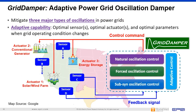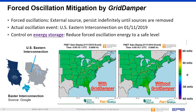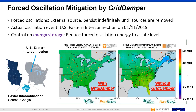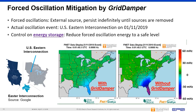Grid Damper also detects and controls forced oscillations. In the U.S. Eastern Interconnection, an oscillation event happened in January 2019 with a driving source in Florida. Based on simulations, Grid Damper was able to quickly detect the forced oscillation and execute fast control over energy storage facilities to greatly reduce oscillation energy to a safe level. This prevents equipment like generators from damage and allows the grid operator sufficient time to locate and remove the driving force.